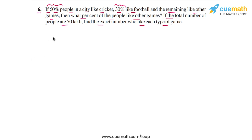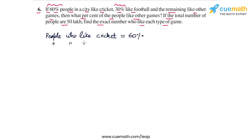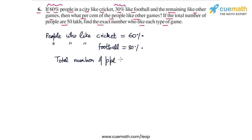Let's write out the given facts. People who like cricket — this number is 60% of the total people. People who like football is 30%. And we have to find the remaining percentage of people who like other games.